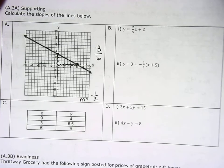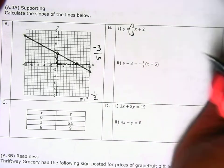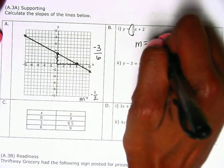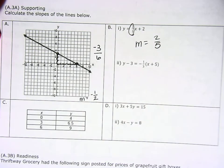Now for b, it's easy. If they give it to us in y equals mx plus b form, we know that m stands for slope. So our slope is positive two over five.